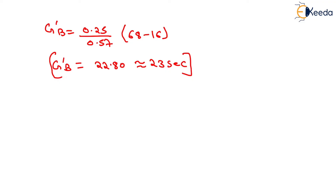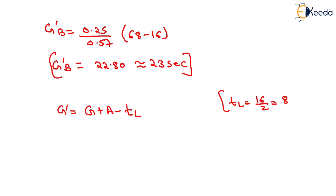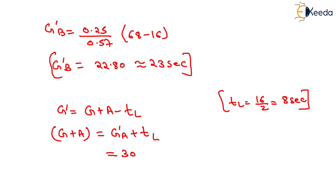The effective green time equals green time plus amber time minus total loss time. The total loss time equals all-red time divided by 2, which is 12 divided by 2, giving 8 seconds as the average total loss time. So the actual green time plus amber time for road A equals G'A plus total loss time, which is 30 plus 8, giving 38 seconds.